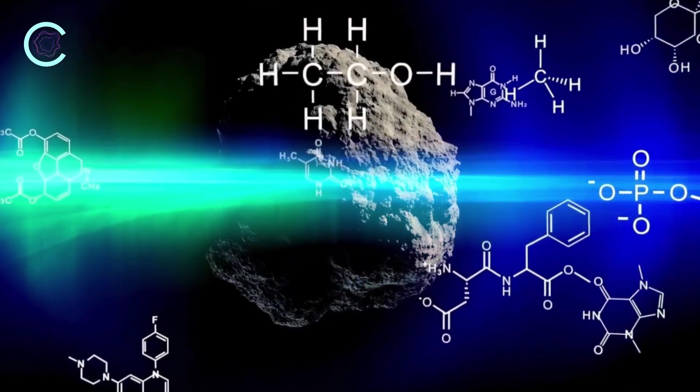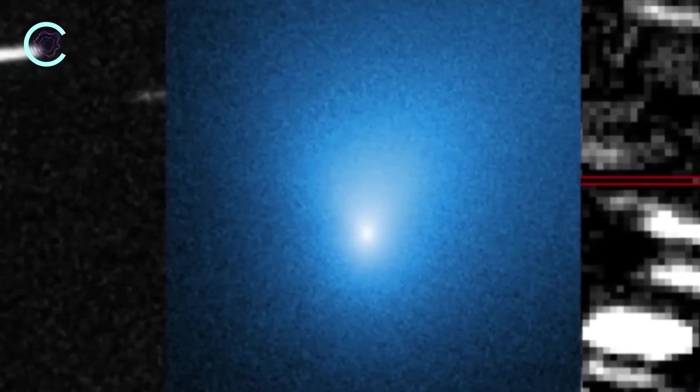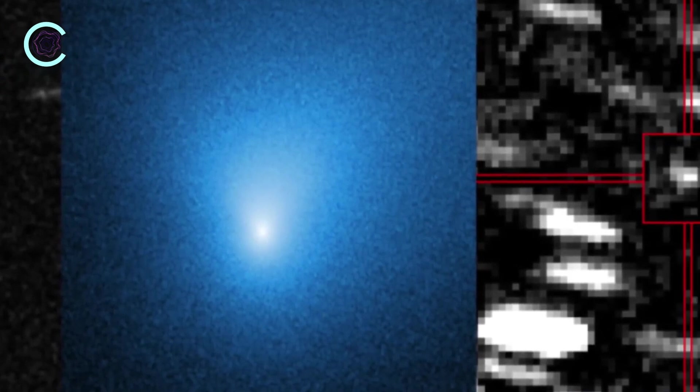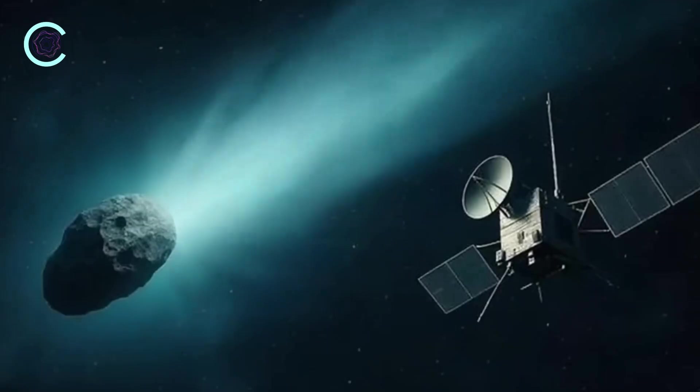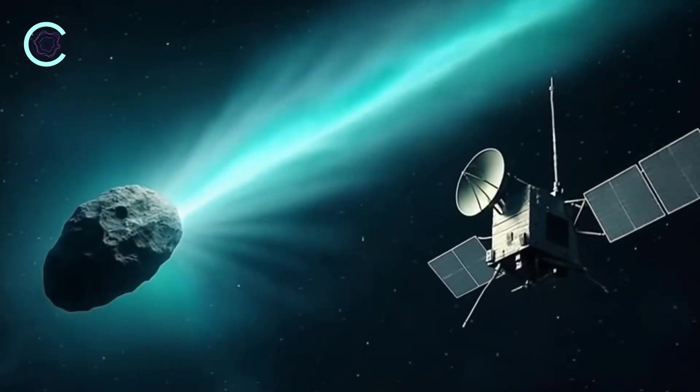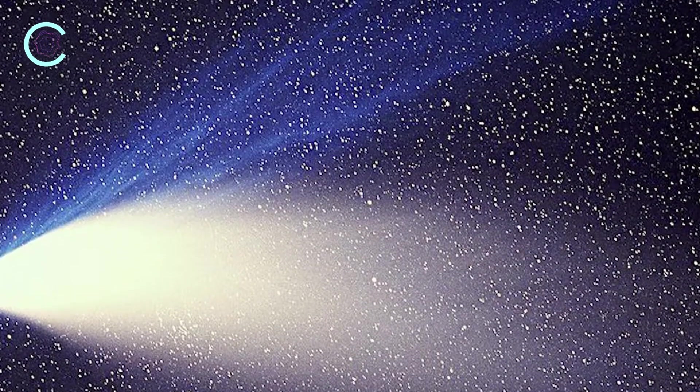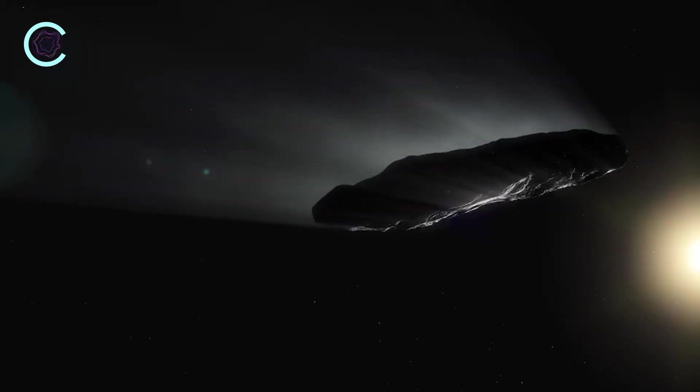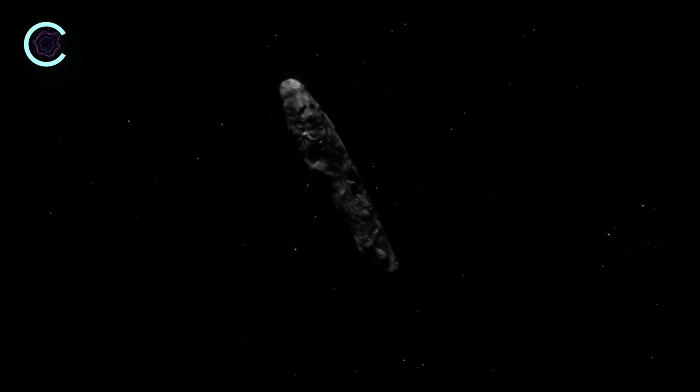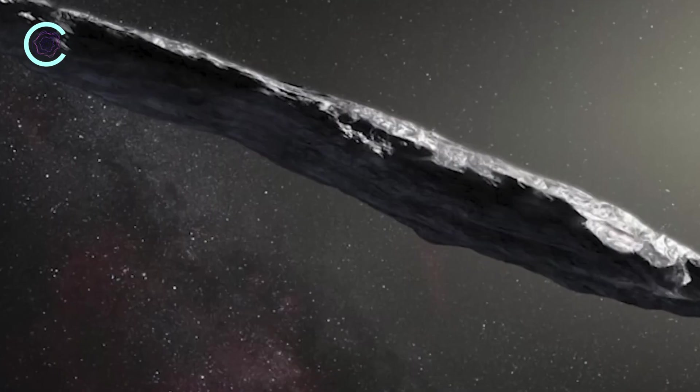But 3I Atlas doesn't do any of that. Instead of wobbling, shifting, or drifting, it moves almost as if it's fixed to an invisible rail. While other interstellar visitors — objects just like it — show dramatic changes in their paths, Atlas barely budges at all. Take 2I Borisov, for example. It shifted by nearly 100 kilometers every single day due to these gas jets. Even Hale-Bopp, one of the largest comets ever discovered, moved around by about 10 kilometers a day. And then there's Oumuamua, the first interstellar object we ever detected. Some days, its path shifted by over 1,000 kilometers. That's how wild non-gravitational acceleration normally is.